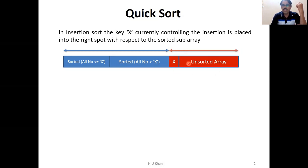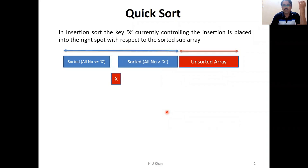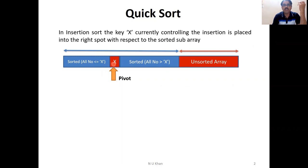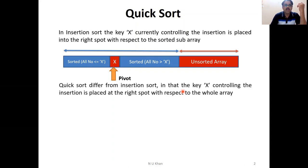In the unsorted array, you choose the first element, say X, and compare with the previous element. If the previous element is greater than X, that record shifts to the right-hand side. You compare the next element; if it is also greater, it shifts right. In this way, records greater than X shift right, and X finds its insertion position — this is the pivot with respect to the sorted sub-array.